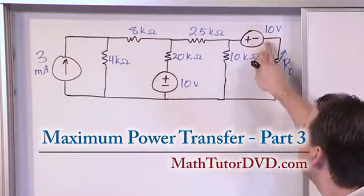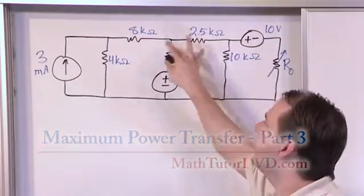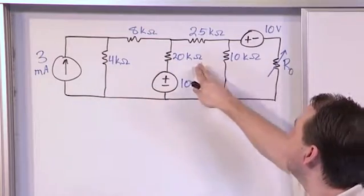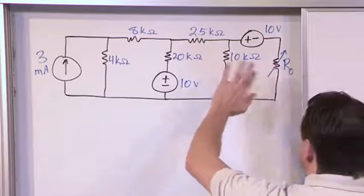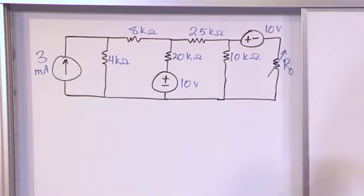a 10 volt voltage source, another 10 volt voltage source, and then a nice assortment of resistors. These are all in the kilo-ohm range, so different values. And the entire circuit is hooked up to a load resistance we're calling R sub naught.